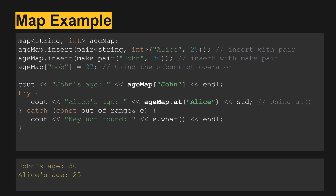For this example, we create age map again and insert just like the last one, and print out John. Since John is in there, it'll print out 30. In this case, Alice's age — there is an Alice at 25 — and we print out Alice, so we get 25. Had we given it something that didn't exist, it would have said key not found and caught that exception.